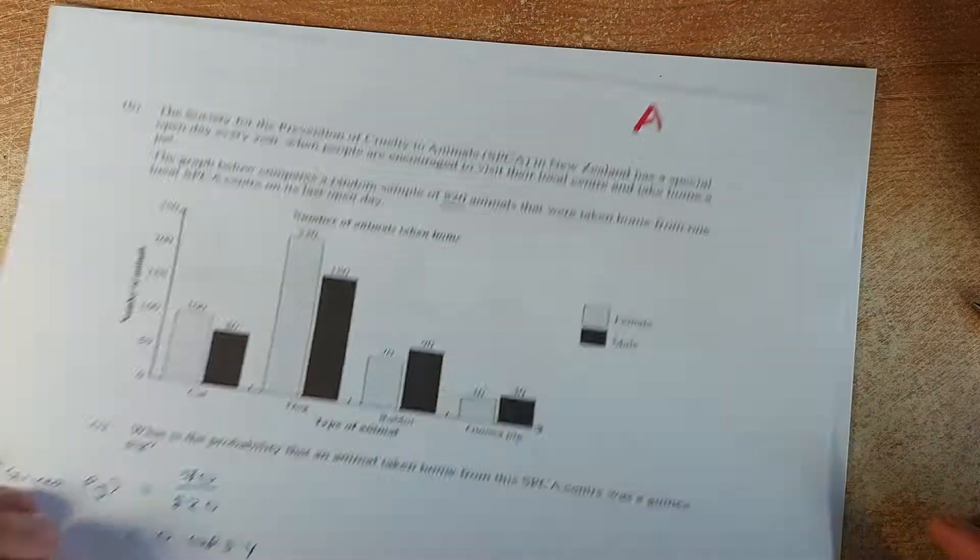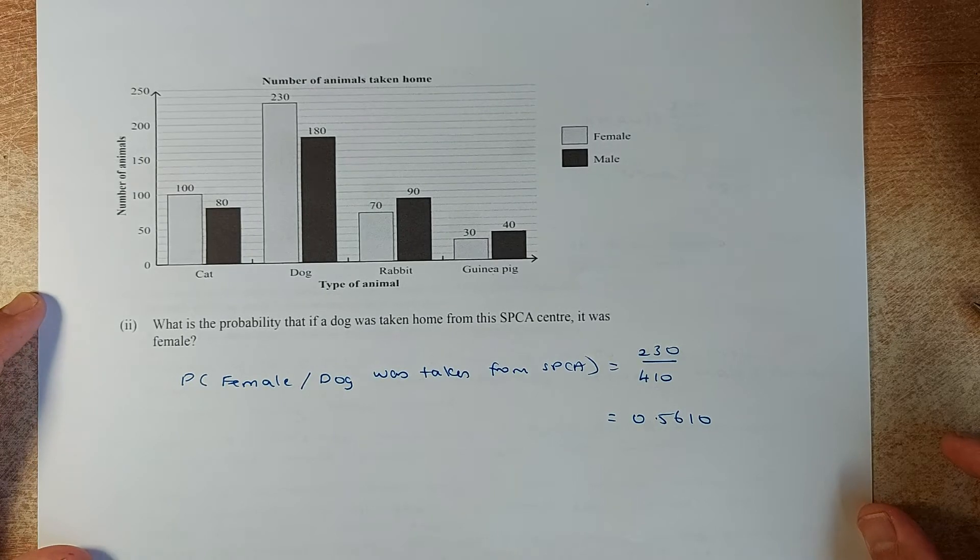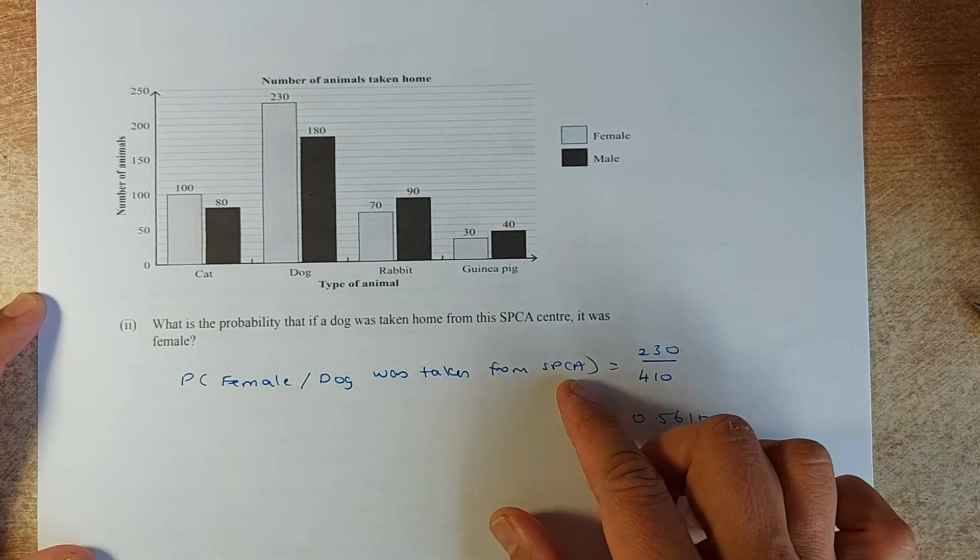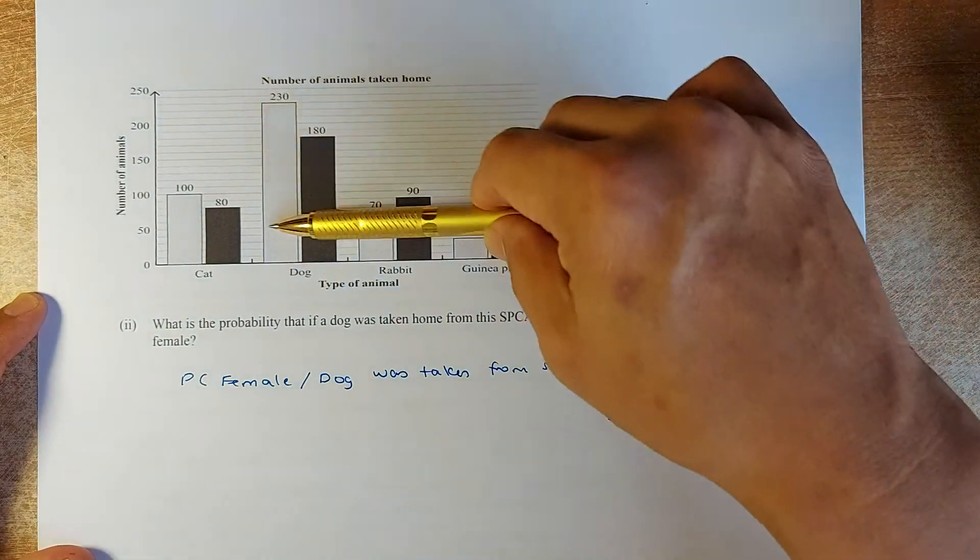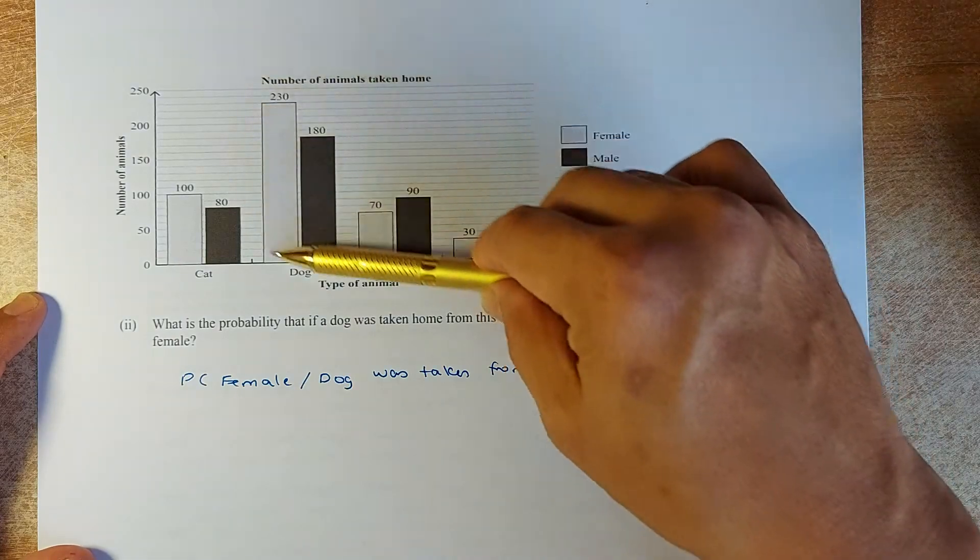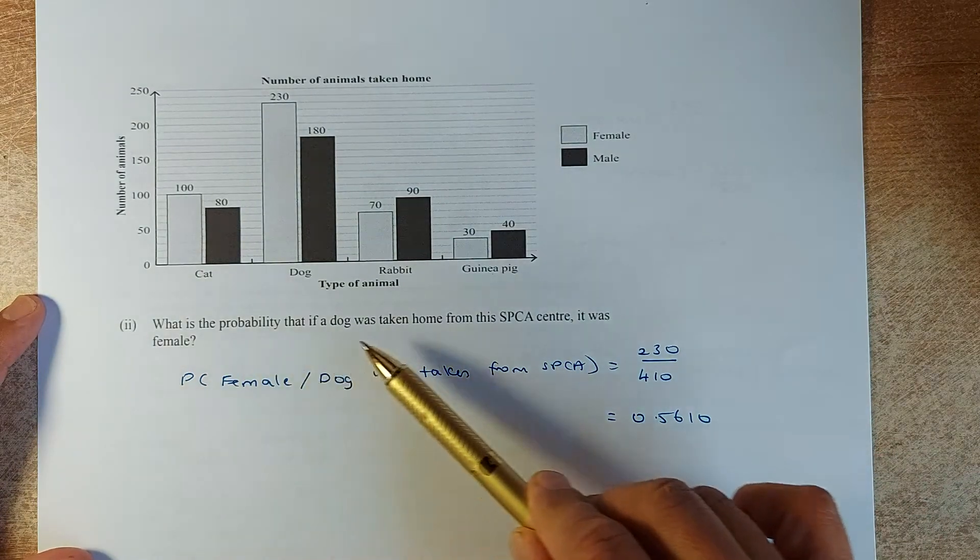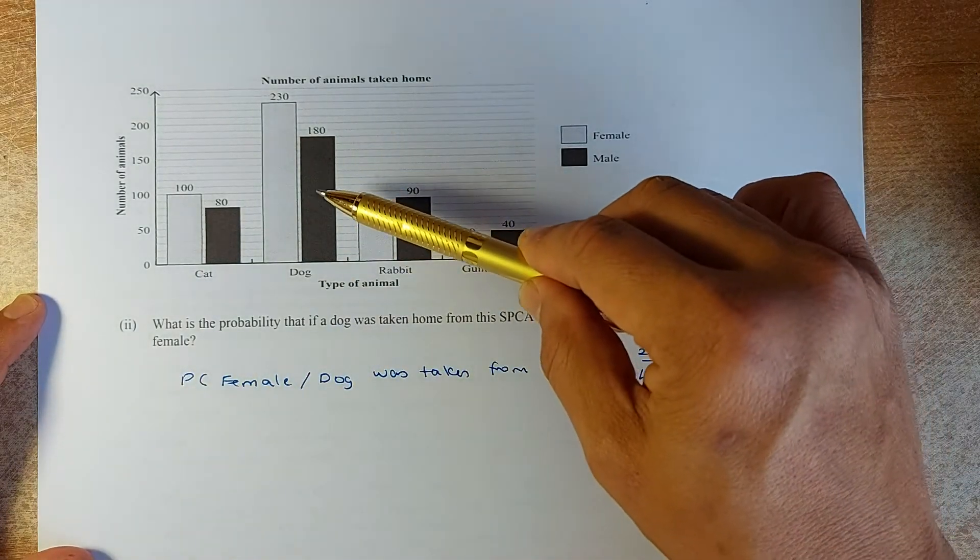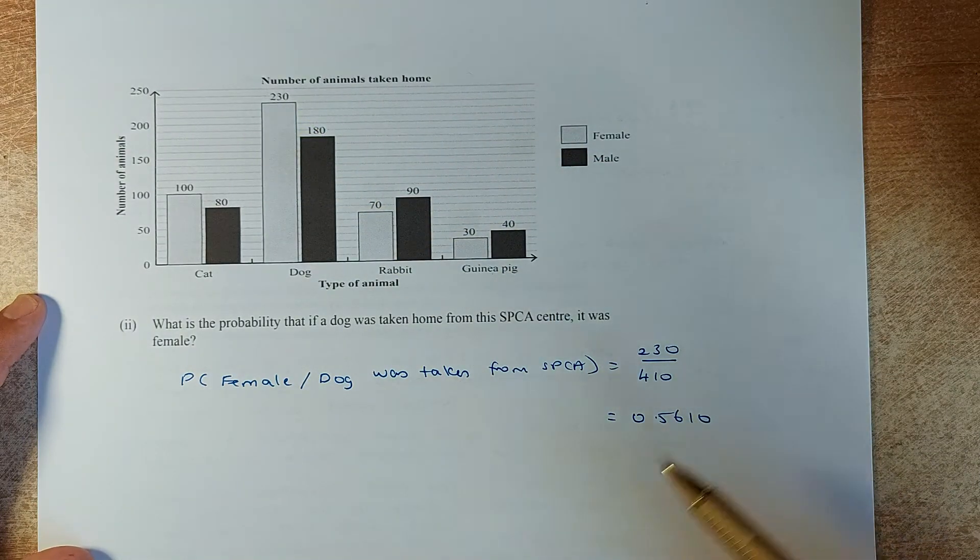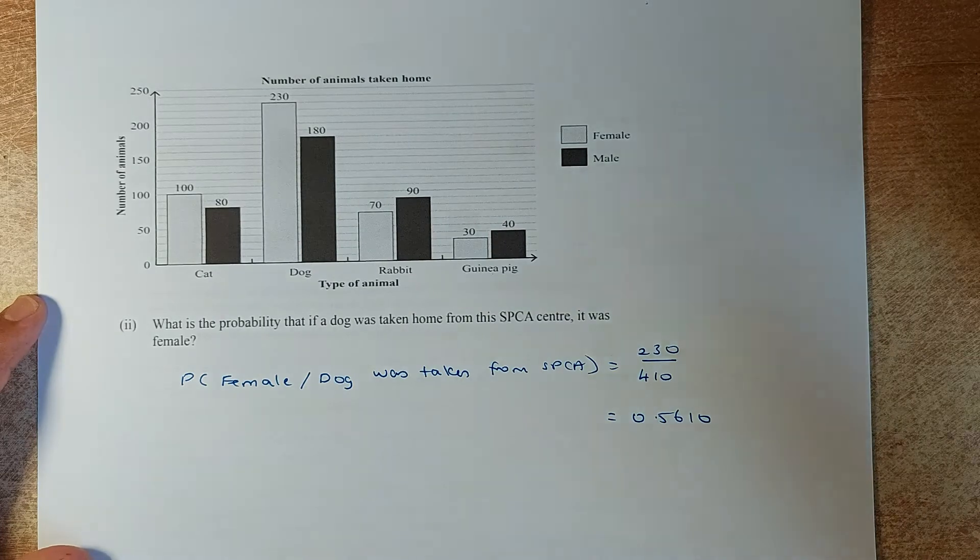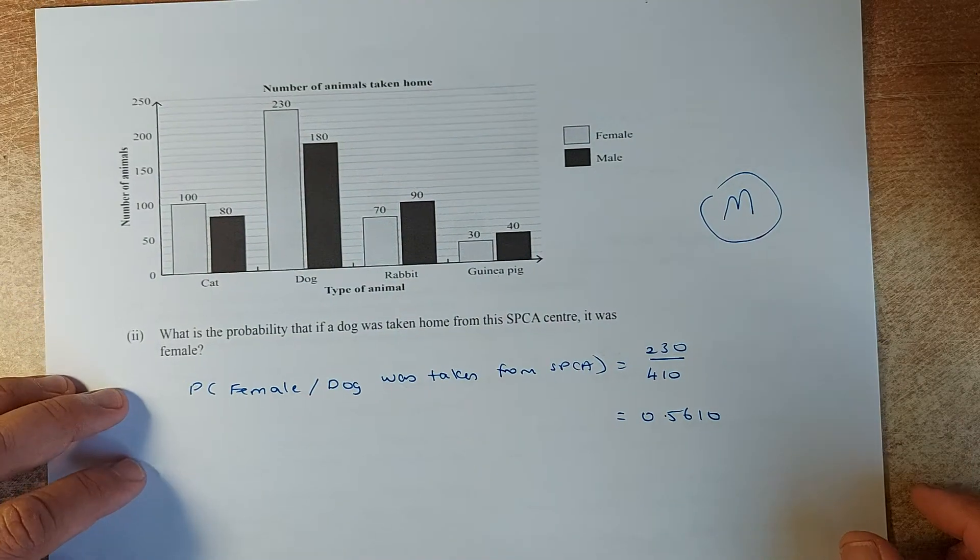Now we shall look at the next question. What is the probability that if a dog is taken, given that the dog was taken, it was a female? In this case, we are only interested in the dog. There are 230 female and 180 male, so there are only 410 dogs in SPCA. How many was a female? Female is light-coloured, so 230 out of 410 dogs. The answer in the calculator is 0.5610, and that will give you a merit. That's an easy merit, isn't it?